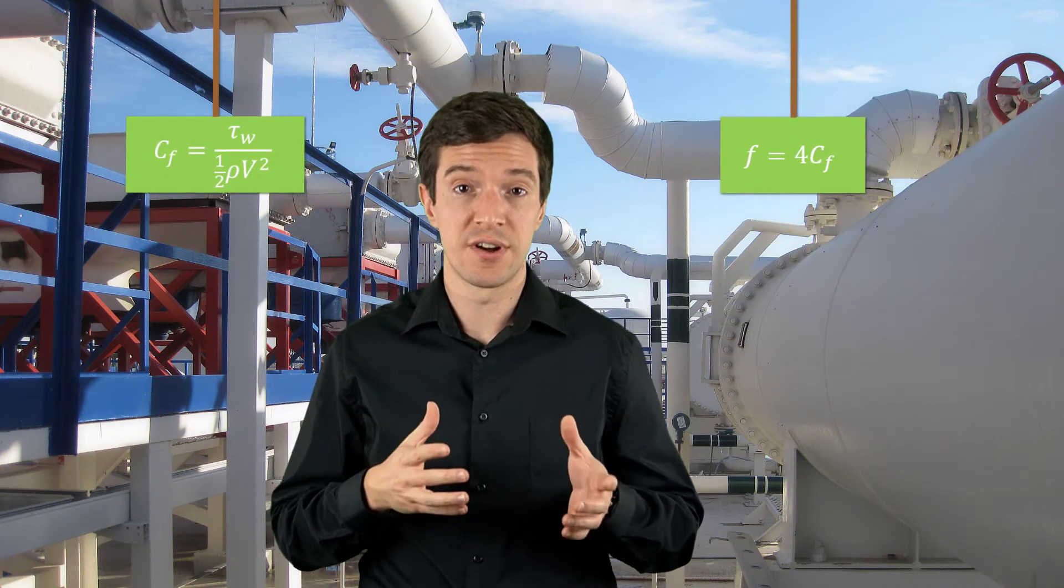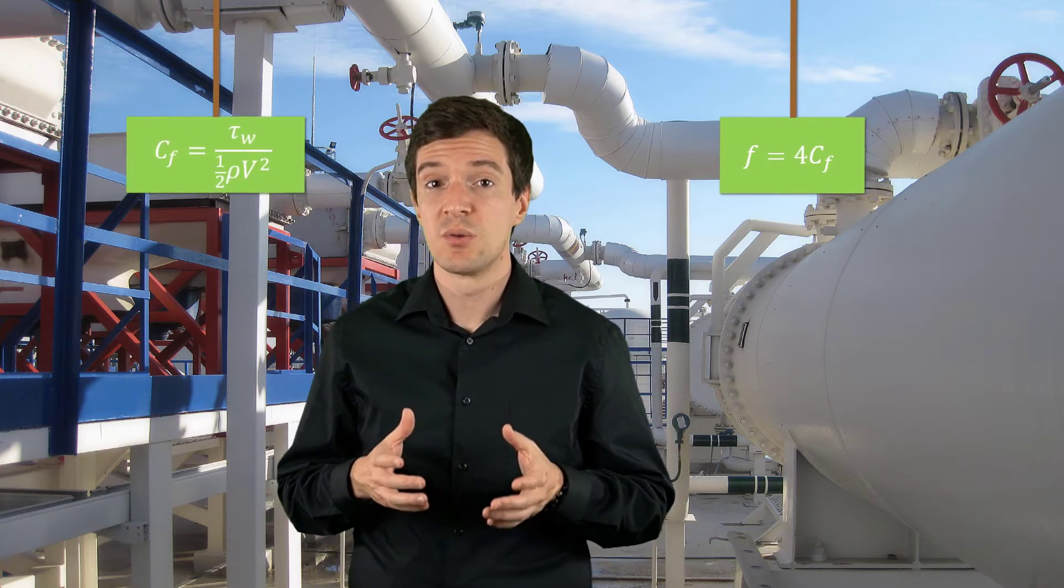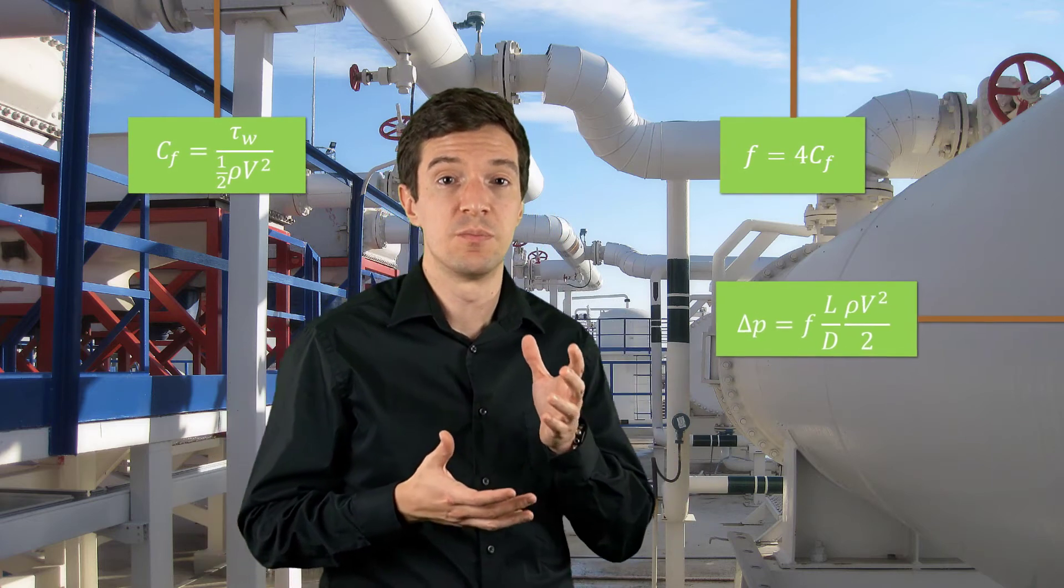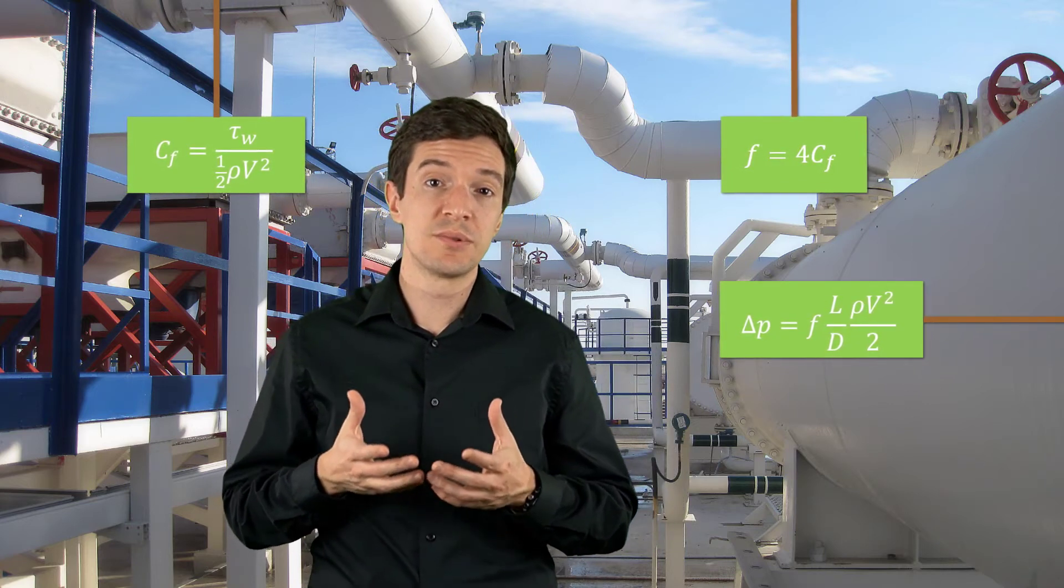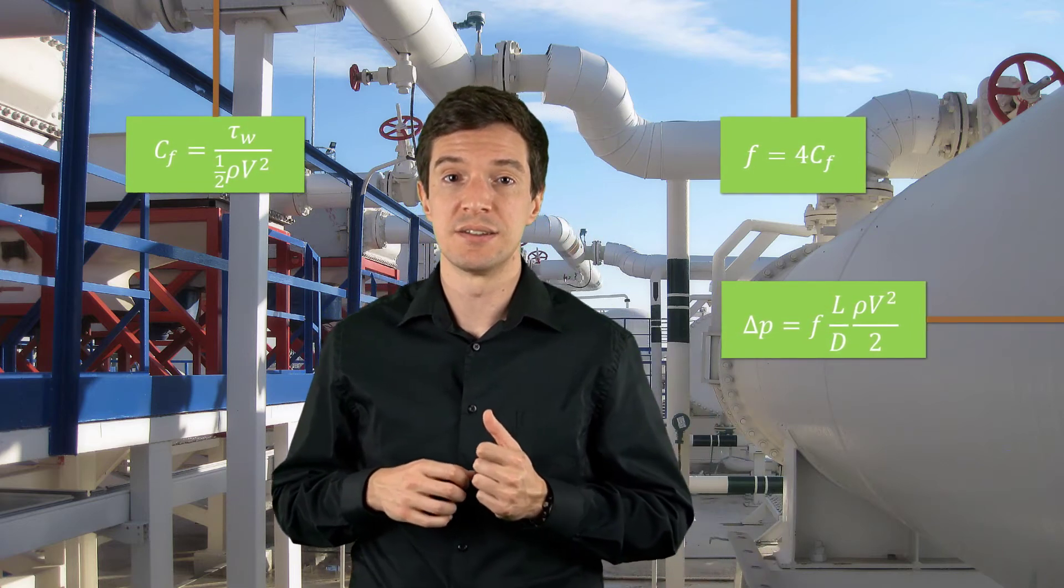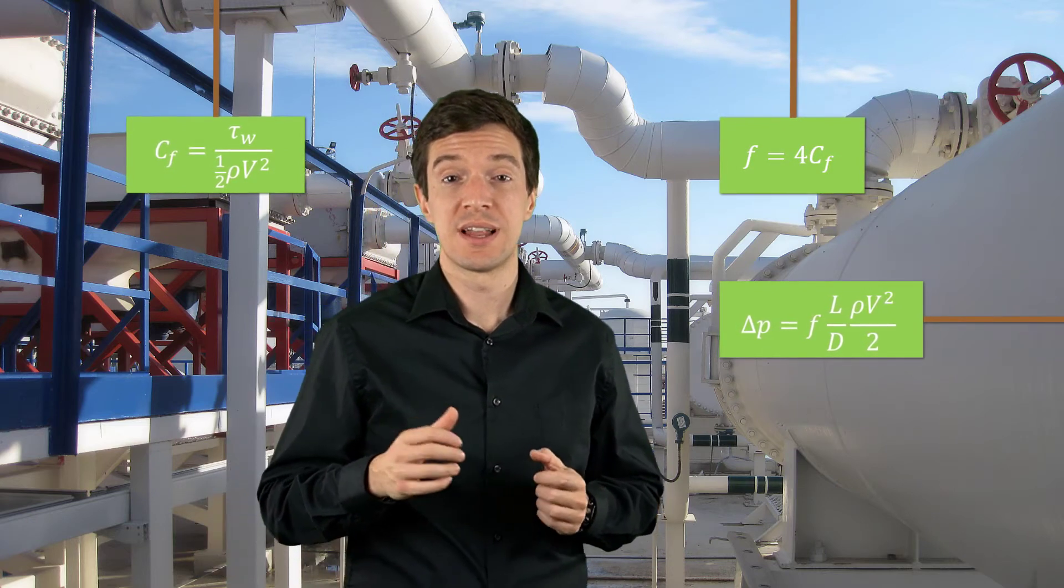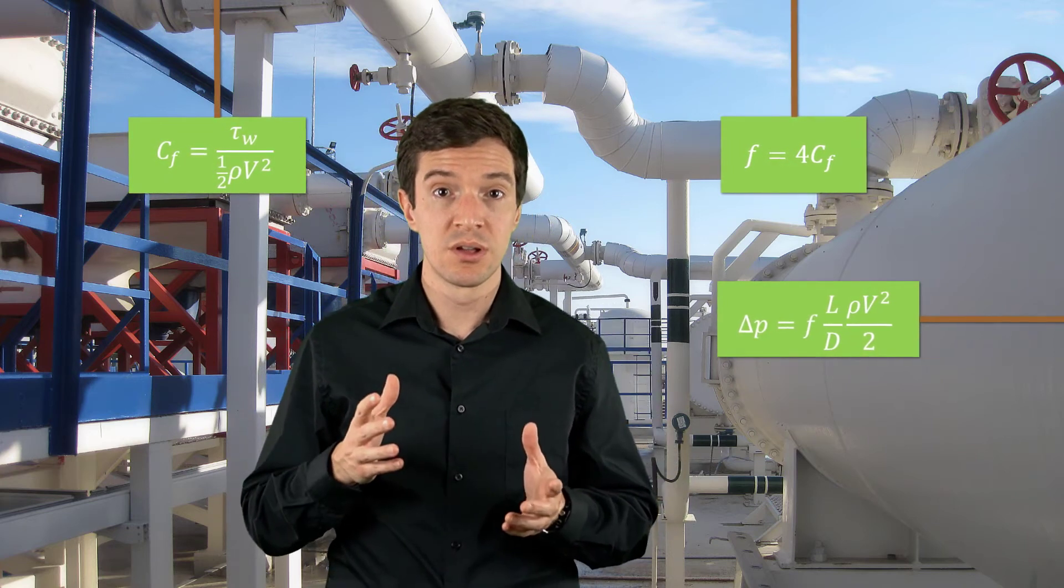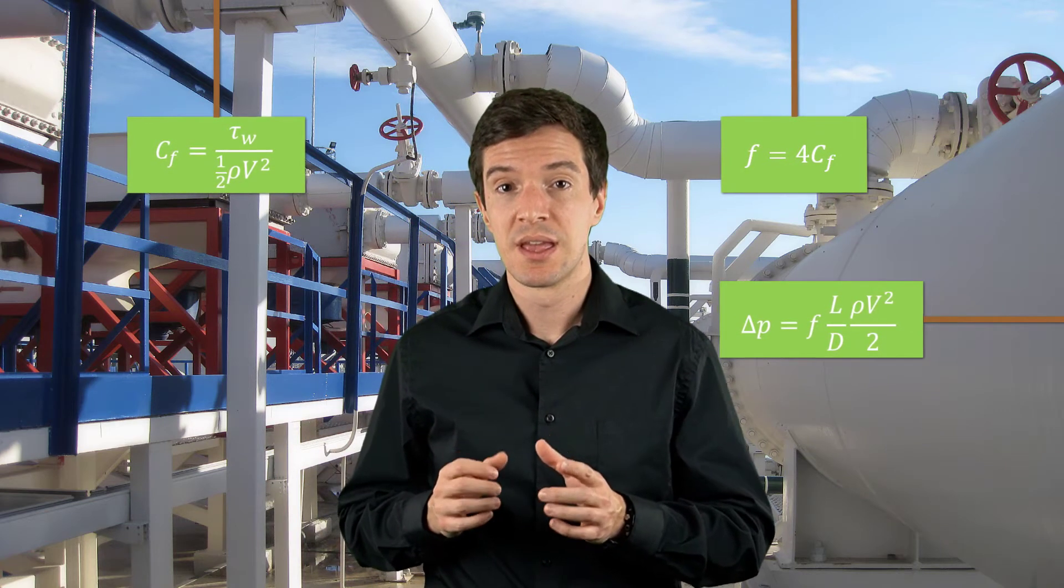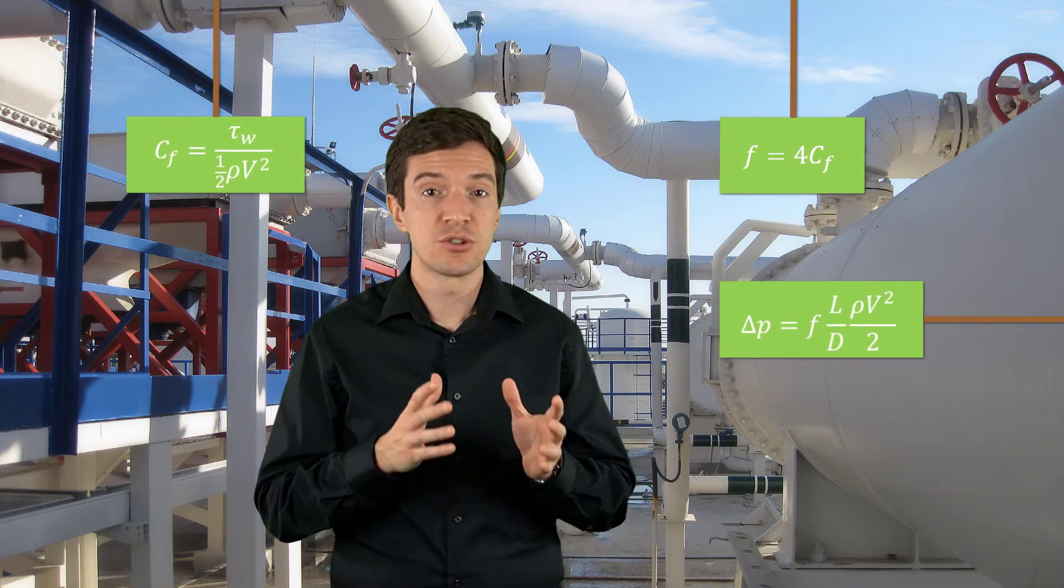Let's now recall the definition for the skin friction coefficient and the Darcy friction factor, that is just the skin friction coefficient multiplied by a factor of 4. Combining these two relations with the shear stress we can obtain an expression of the pressure drop along the pipe in terms of the Darcy friction factor. The relation was developed in the mid 19th century by Henri Darcy, a French engineer, without using any integral analysis but only through dimensional analysis. With this equation we can define a pipe flow based on the pipe dimension, the flow rate and the density of the fluid. And after determining an appropriate friction factor we can estimate the pressure drop along the pipe.